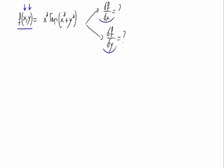To begin with, let's calculate the partial derivative with respect to x. For doing this, we just have to differentiate f with respect to x and consider y as a constant term — a number. We can see that our function f is a product of x squared and the tangent of x squared plus y squared.